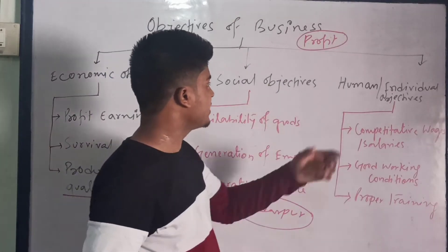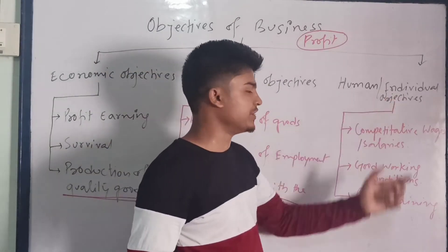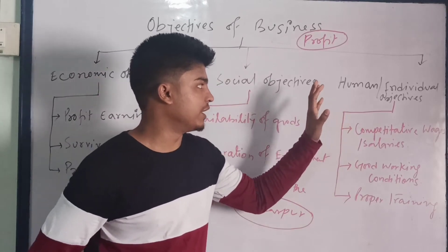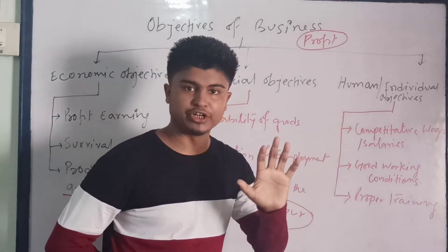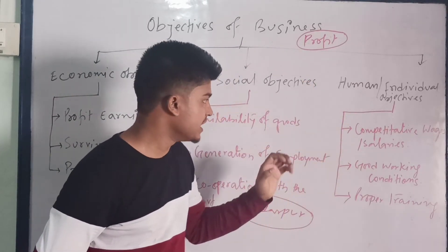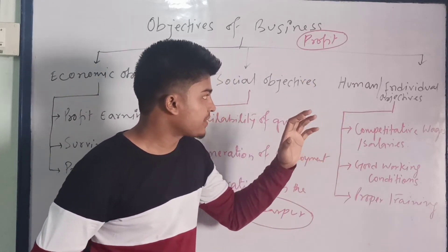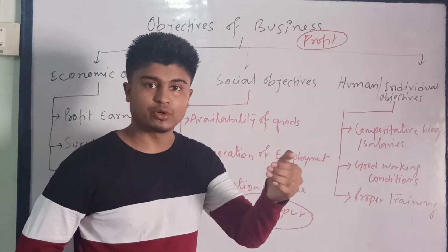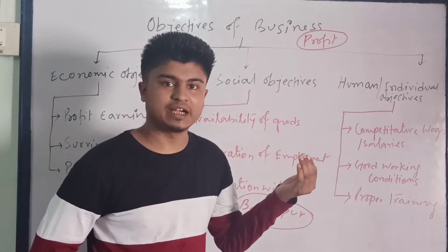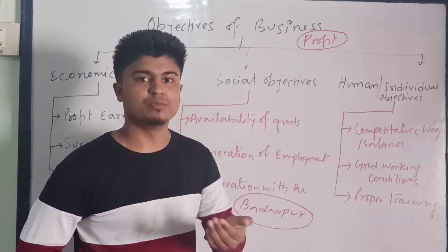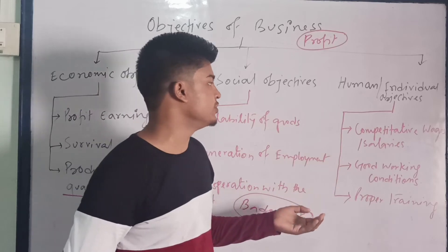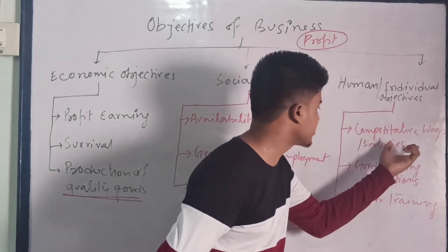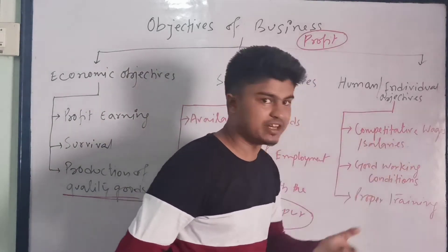The third category is human or individual objectives. Now we will see what sub-objectives or activities are undertaken under human or individual objectives. The first point is competitive wages or salaries.